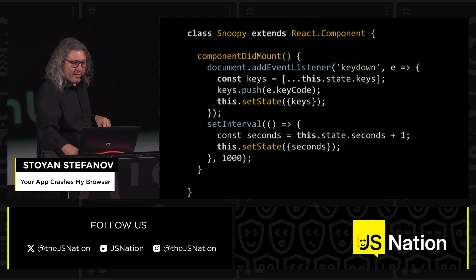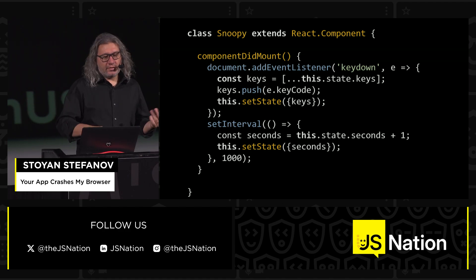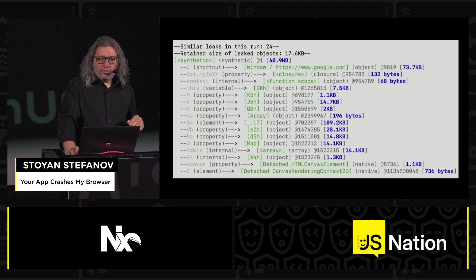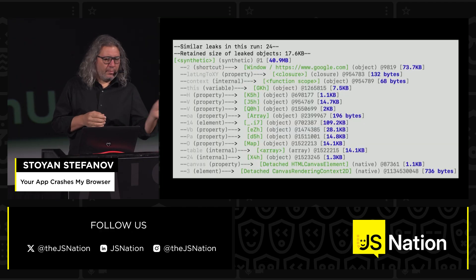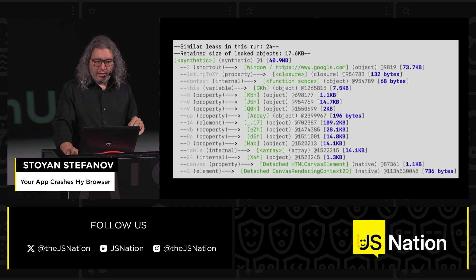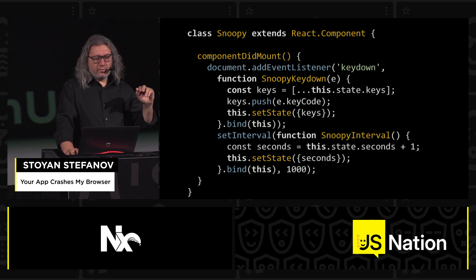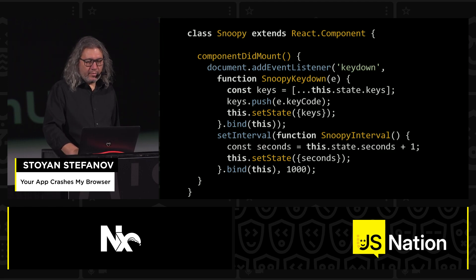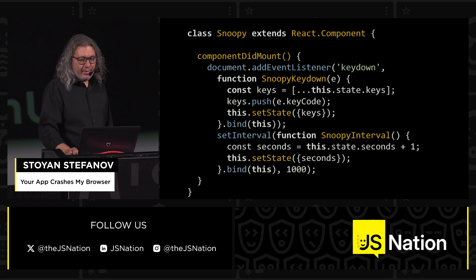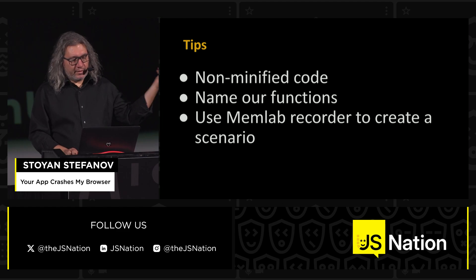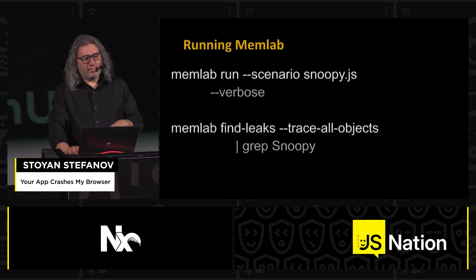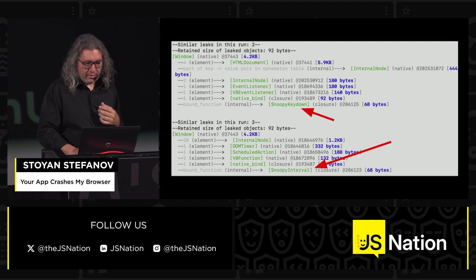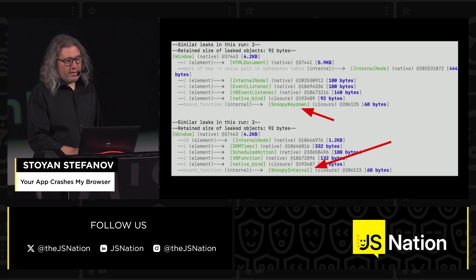Spot the leak, session two — same thing but we added a setInterval, so there's another listener that just counts time. When you remove the component, there are now two listeners just hanging around. If you debug this with MemLab and the code is minified, it's going to be horrible — you might not be able to see anything. So a good idea is to use non-minified code for debugging, and also to name your functions instead of using anonymous ones. When you give names to your functions and run MemLab with the generated scenario file, our SnoopyKeyDown and SnoopyInterval are clearly visible — so you know where to look.